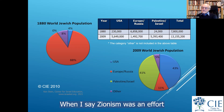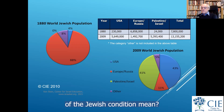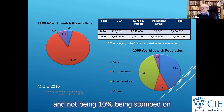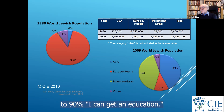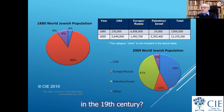When I say Zionism was an effort at Jewish national liberation, it was an effort to normalize the Jewish condition — to make things somewhere between 45 and 55 percent, not 10 percent being stomped on by 90 percent. Why do you suppose so many Jewish intellectuals and contributors to modern Zionism came out of Ukraine in the 19th century?